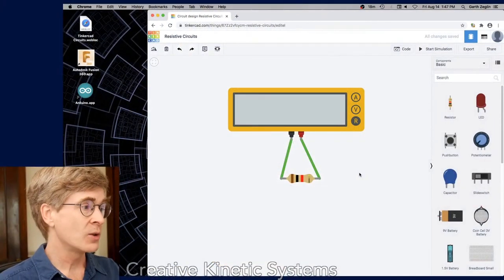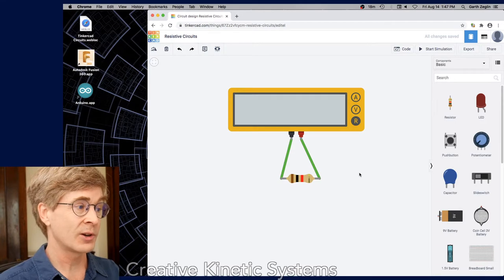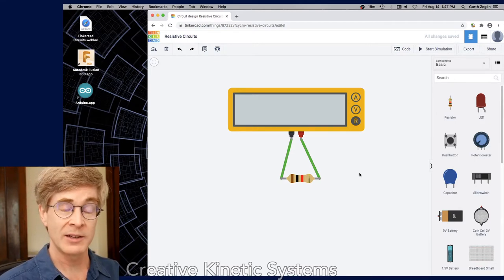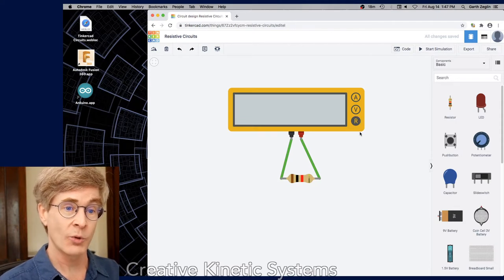The first circuit I want you to build is simply measuring a resistor with an ohmmeter, a resistance meter. Here's the one case where I'm going to show you what it looks like in Tinkercad before I draw the circuit. So here we have Tinkercad, the resistor, it's a 1K resistor, and connected to it is the multimeter set to the R mode for resistance, otherwise known as an ohmmeter.